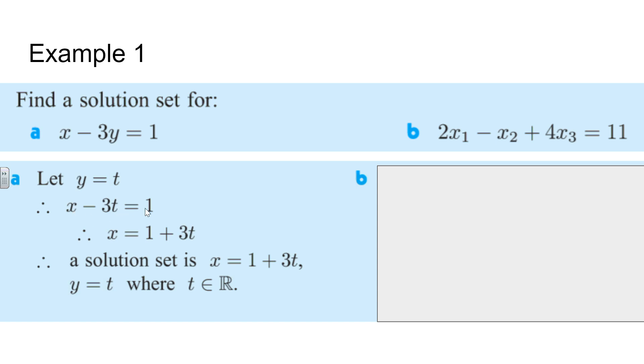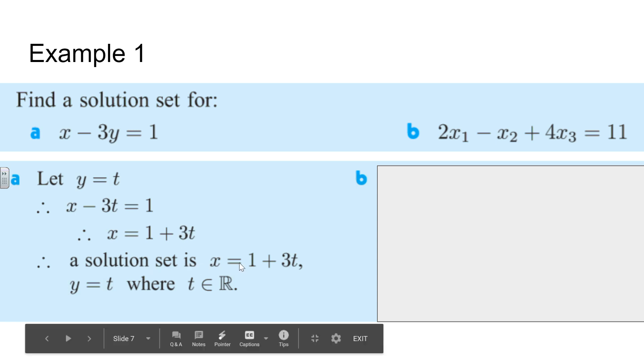So if y equals t, then instead of x minus 3y equaling 1, I really have x minus 3t equals 1. And then I just solve for x by adding 3t over, so x equals 1 plus 3t. So therefore I go to write my solution set, I say x equals 1 plus 3t and y equals t, where t is a real number.